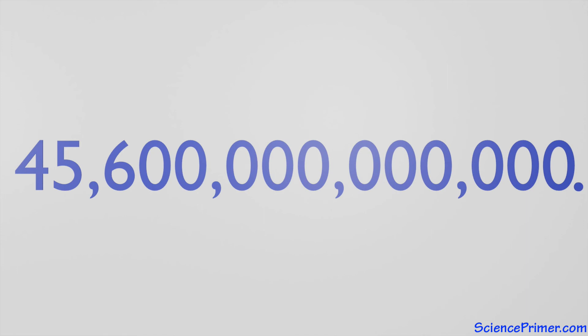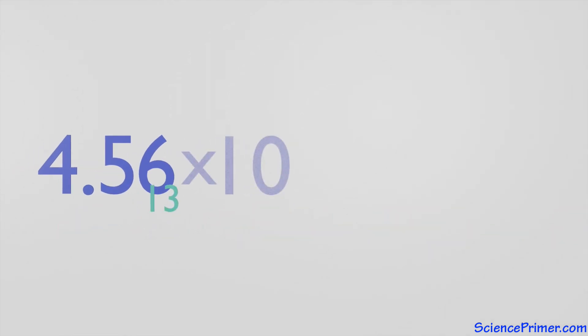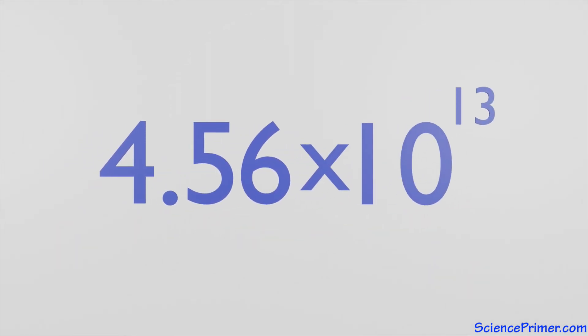First, count the number of places the decimal needs to move in order to make the coefficient end up between 1 and 10, which again is a technical way of saying that there is only one non-zero digit to the left of the decimal. The rest of the expression is then written as the coefficient times 10 raised to the number of places the decimal place moved.